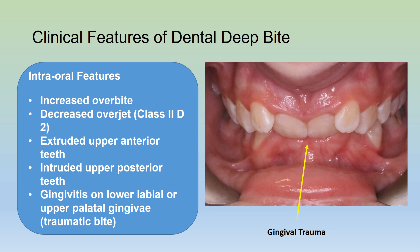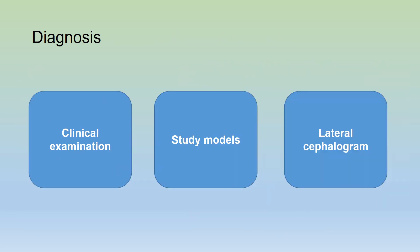Now the clinical features of dental deep bite. Intraorally, we will see an increased overbite and a decreased overjet, especially in a Class 2 deep bite type of malocclusion. The upper anterior teeth are extruded while the upper posterior teeth are intruded. There may be gingivitis on the lower labial or upper palatal gingiva due to a traumatic bite.